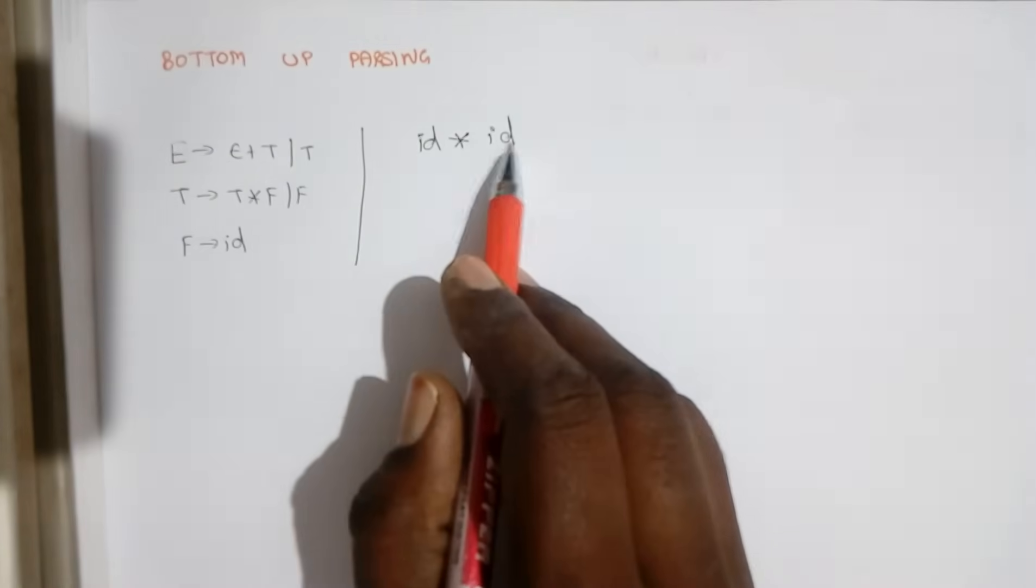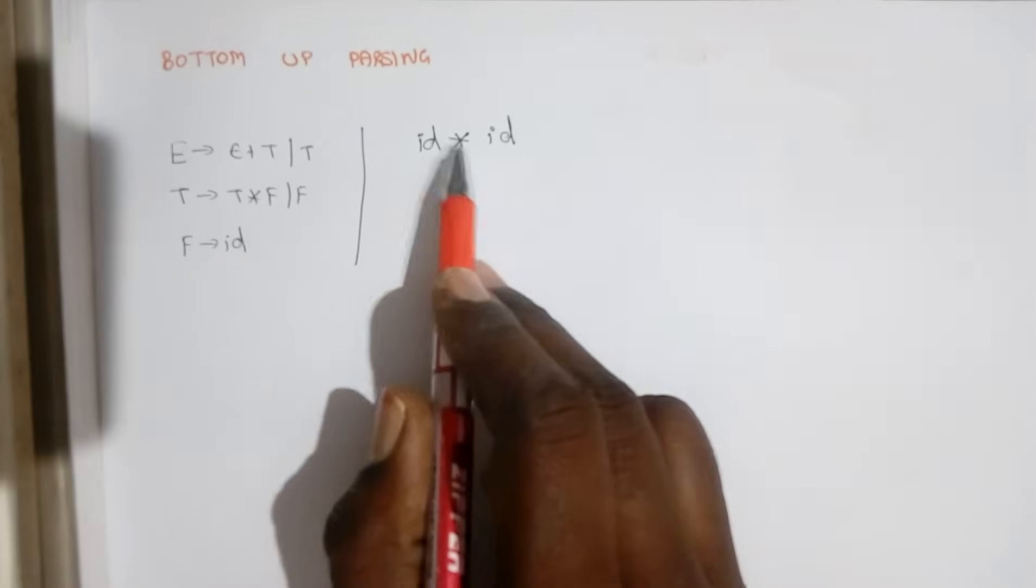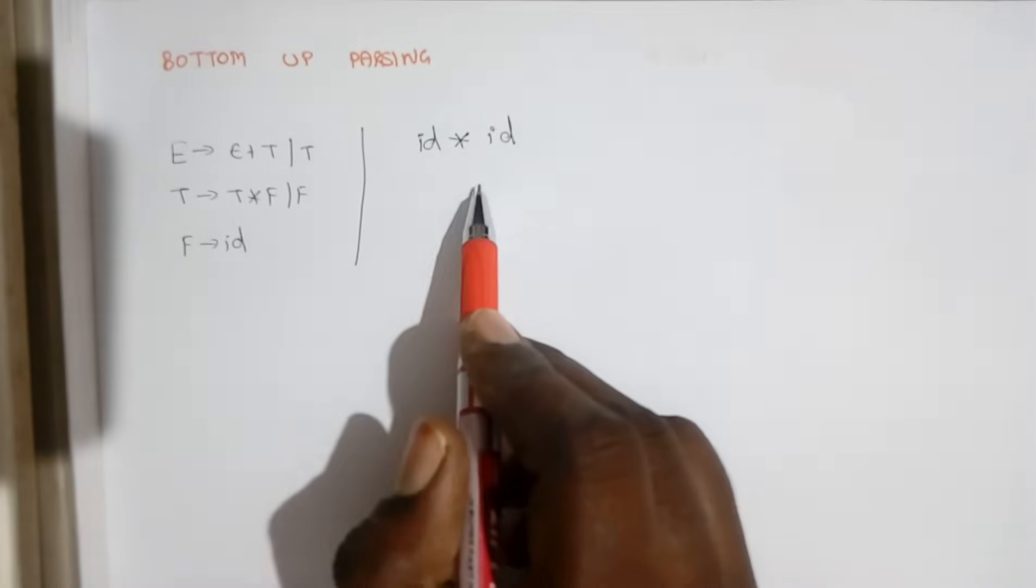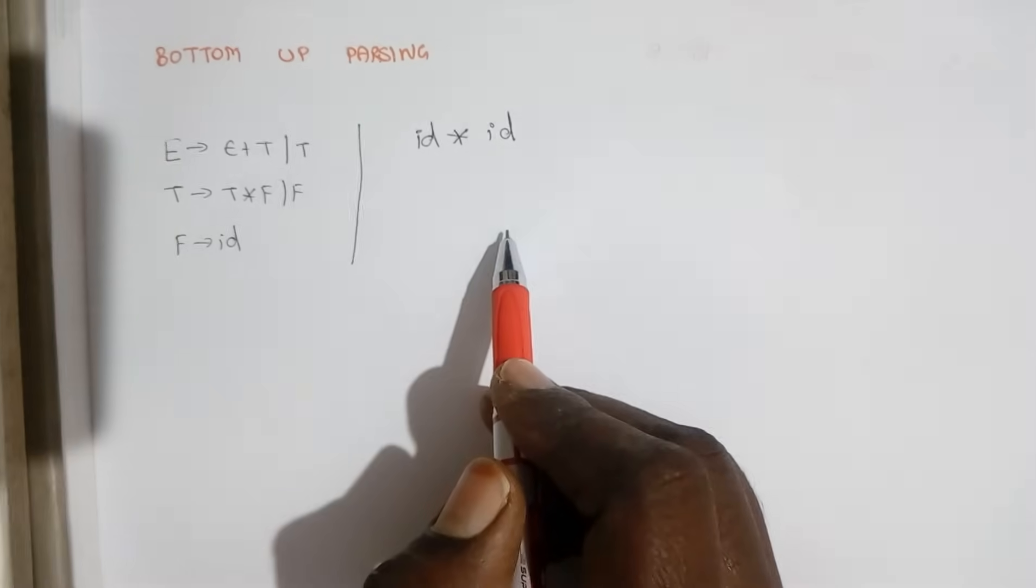We start with the input symbol and we keep on reducing it with its corresponding production and finally it will lead to a starting symbol.